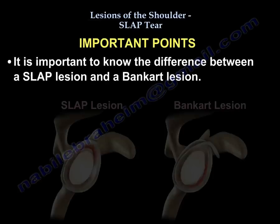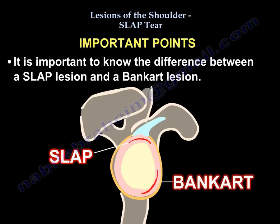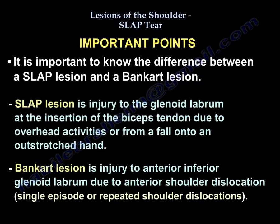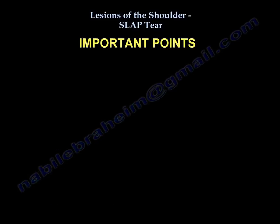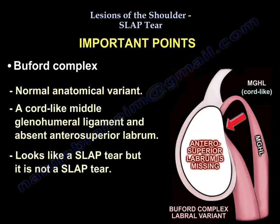Type 2 SLAP tear is very common on standard board exam questions. It is important to know the difference between a SLAP lesion and a Bankart lesion. The SLAP lesion is injury to the glenoid labrum at the insertion of the biceps tendon due to overhead activities or a fall on the outstretched hand. The Bankart lesion is injury to the anterior inferior glenoid labrum due to anterior shoulder dislocation. Another area that can be confused with a SLAP tear is the Buford complex — a normal anatomic variant consisting of a cord-like middle glenohumeral ligament and absent anterior superior labrum. It looks like a SLAP but it is not.